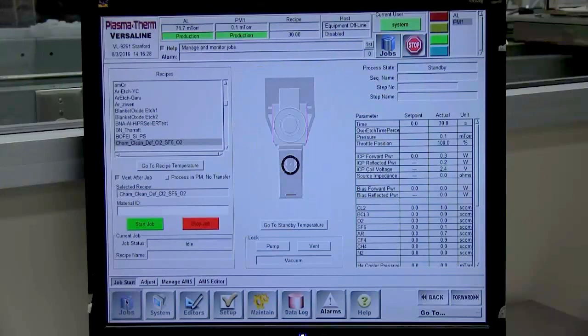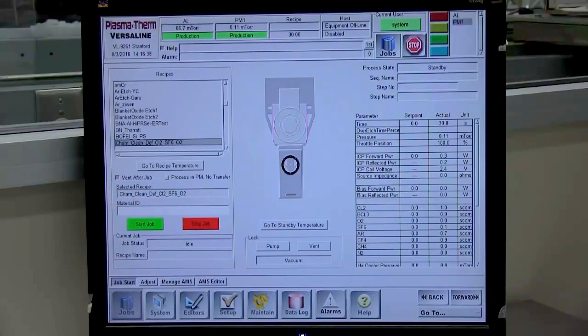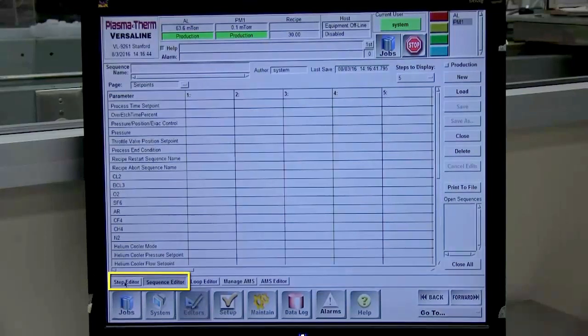Choose the recipe to be run from the Recipes section in the Jobs / Job Start screen. Note that the recipe sequence is a combination of several recipe steps, and that in the Plasmatherm Versaline systems, the sequence as well as recipe steps are stored separately.